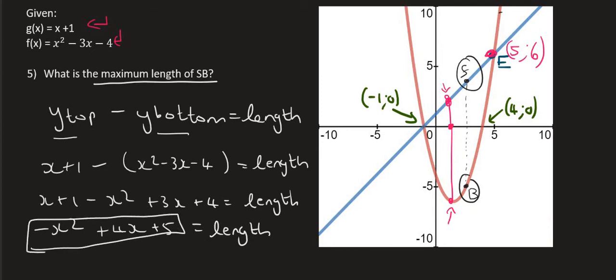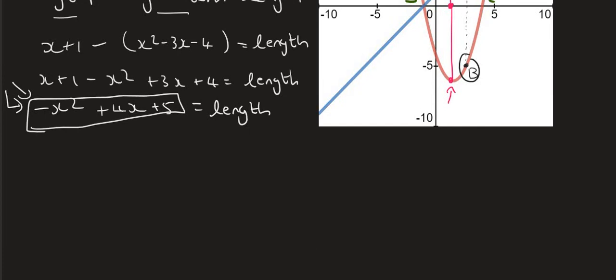Now that equation over there is a parabola. So if we want to find the maximum length, then all you do is you find the turning point of this parabola over here. Not this parabola at the top. This new parabola, this new equation that we've just developed.